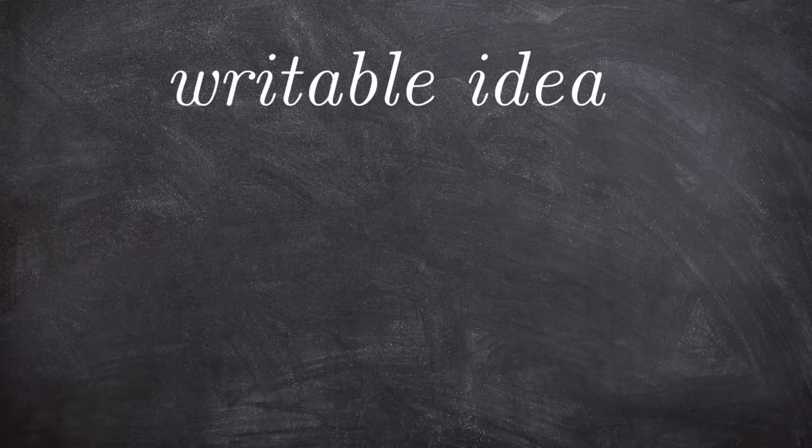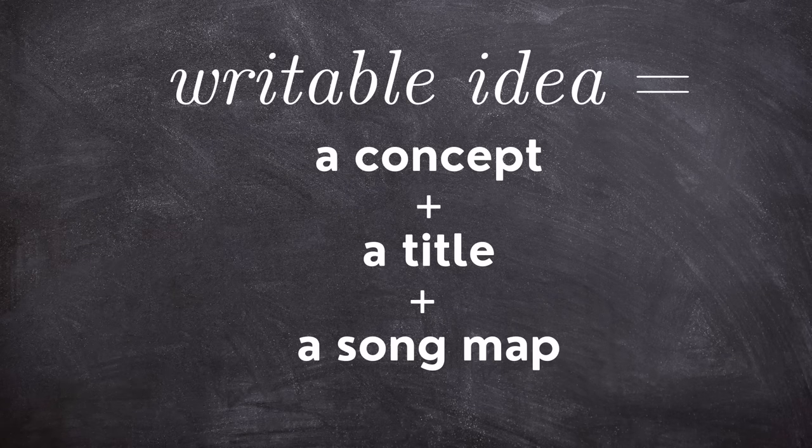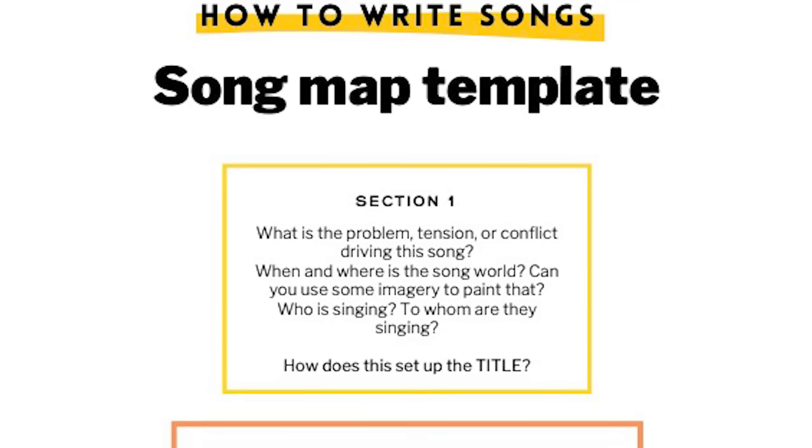So what's a writable idea? Here is our formula. A writable idea is three things: a concept plus a title plus a song map. I'm going to break each of these three components down in detail, and when we get to song maps I'm not only going to show you examples of great song maps but also share a free PDF of a song map template I've created just for you. If you want to grab it right now, the link is in the video notes.